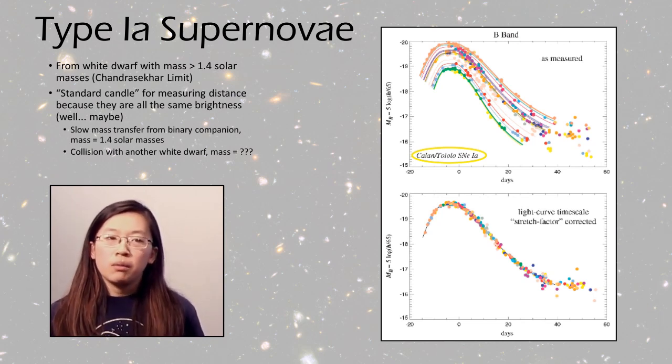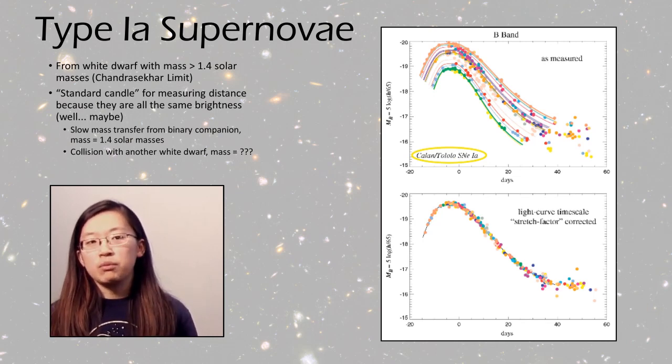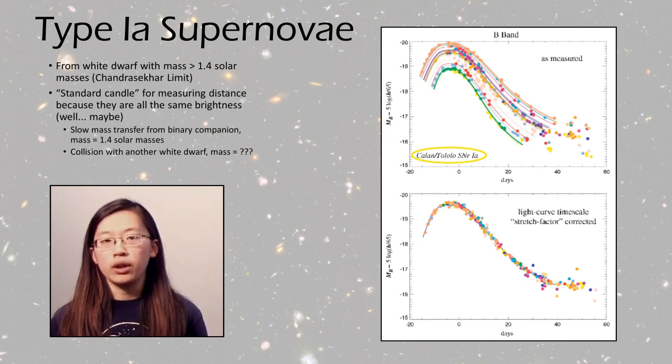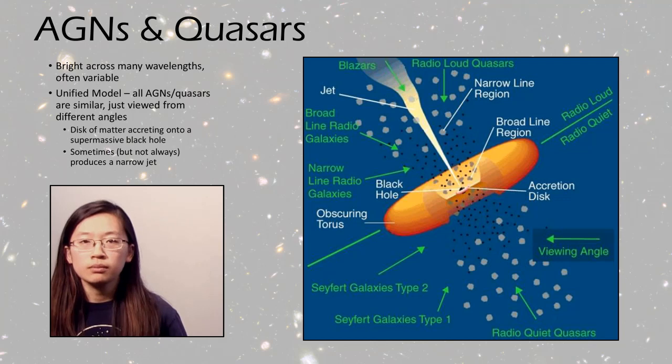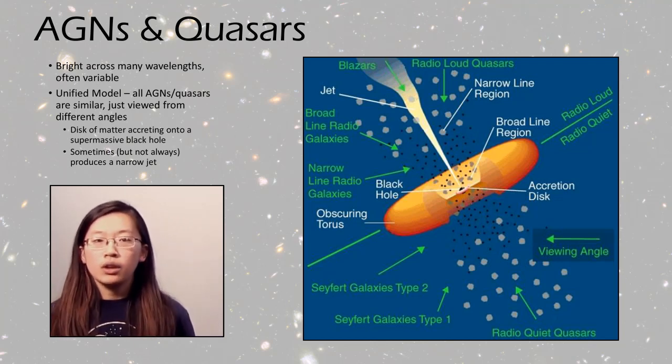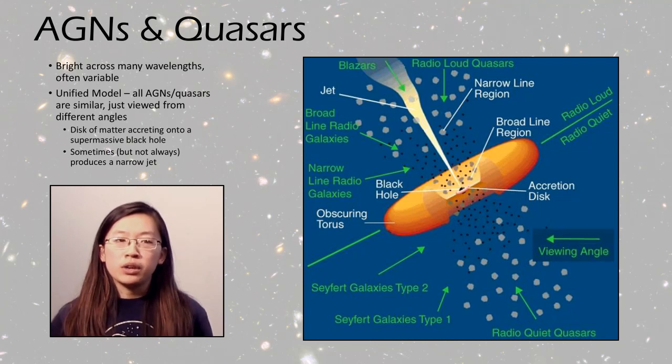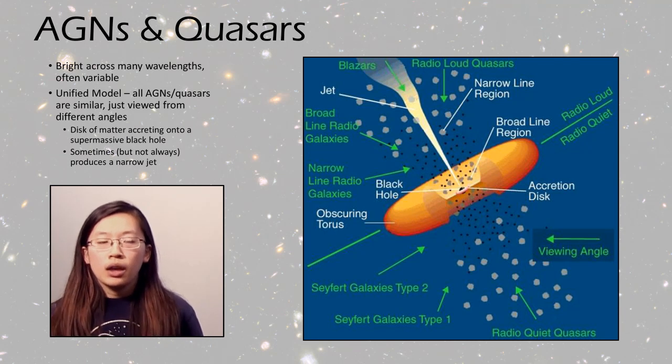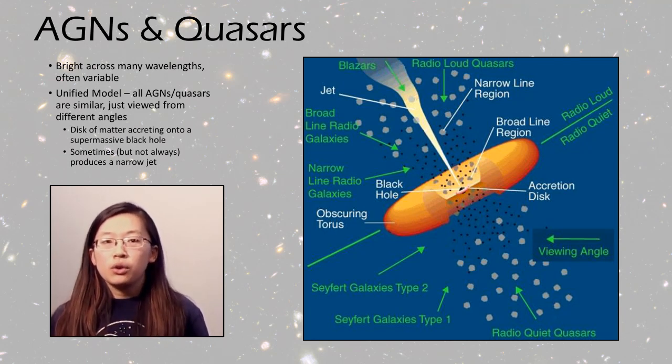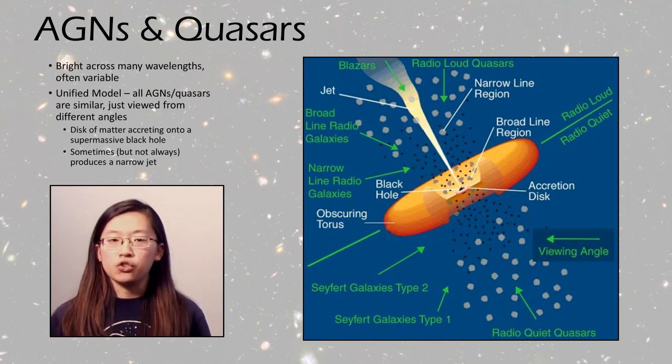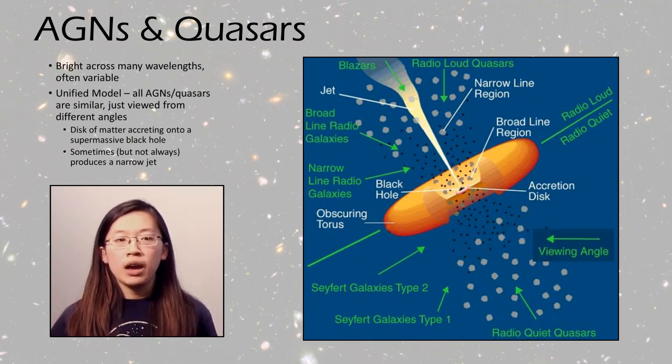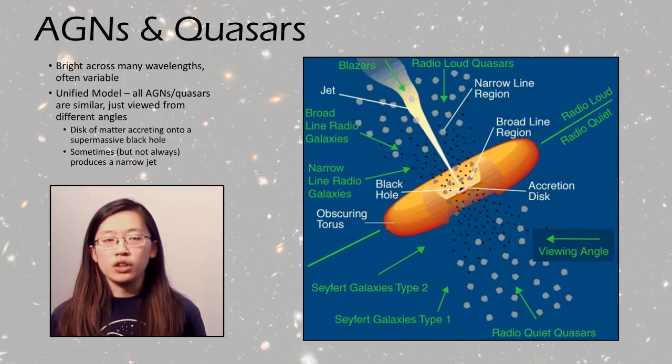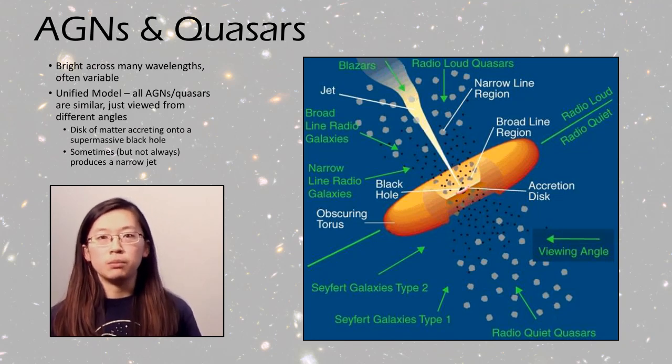However, we're discovering that a significant fraction of these supernovae actually come from the collision of two white dwarfs, which means we don't actually know the mass before it went supernovae. Next, we have AGNs and quasars. Like I said earlier, these are often defined by being bright across many wavelengths and being variable brightnesses. And there's a unified model of AGNs, which says that they're all pretty much the same thing. It's a supermassive black hole with a disk of matter around it, and sometimes it produces a jet. And all the different kinds of AGNs and quasars that we see are just from viewing this system from different angles.